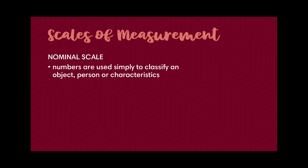Let's get into the lesson proper and talk about the different scales of measurement. This is a very important lesson because when you are able to identify a specific value or question's scale of measurement, it will help you choose what specific statistical technique to use for analysis. The first scale is called the nominal scale — numbers used simply to classify an object, person, or characteristic. The goal is to quantify qualitative data or categories.